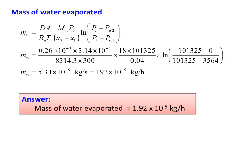The mass of water evaporated is 1.92 into 10 power minus 5 kilograms per hour.